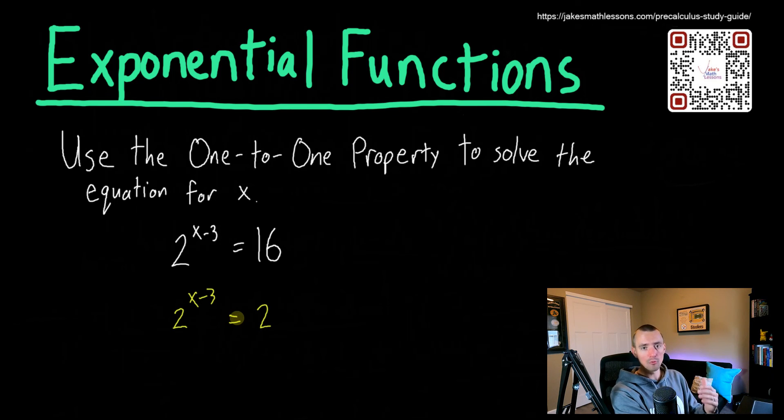Because if we can do that, then we can use the one-to-one property to say that the powers must be equal to each other. So that's why the one-to-one property is nice. So how can you rewrite 16 as two raised up to some power? Or in other words, what power do you have to raise two to, to get 16?